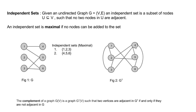Now we have an interesting observation. {1,2,3} are independent sets in the original graph G, so {1,2,3} become cliques in its complement. And not only that — since {1,2,3} are a maximal independent set, {1,2,3} in the complement become maximal cliques. Similarly, {4,5,6} in the original are independent sets; in the complement (figure 2), {4,5,6} are maximal cliques.